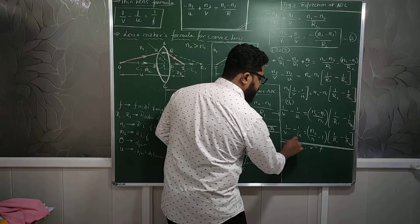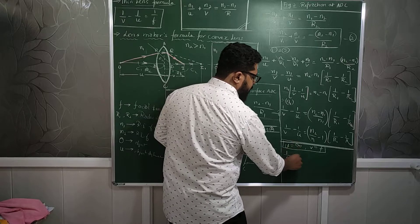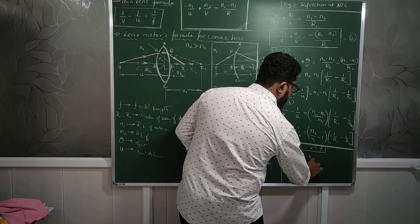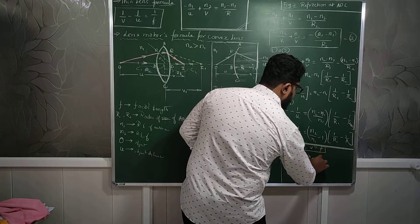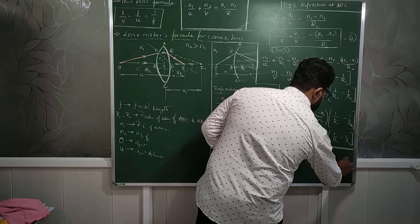V is F. In this equation if I put these two values, V is F, 1 by F minus 1 by infinity is equal to N2 by N1 minus 1 into 1 by R1 minus 1 by R2.